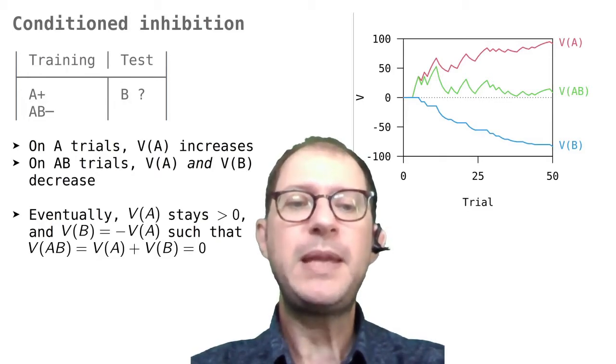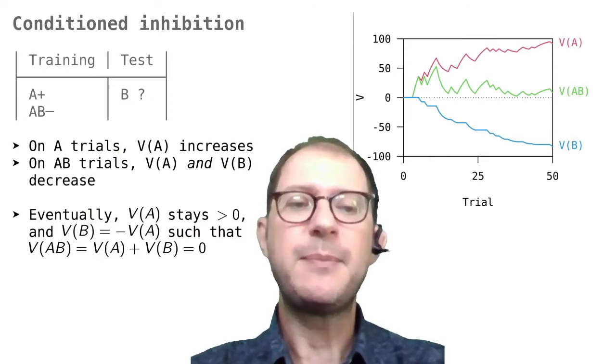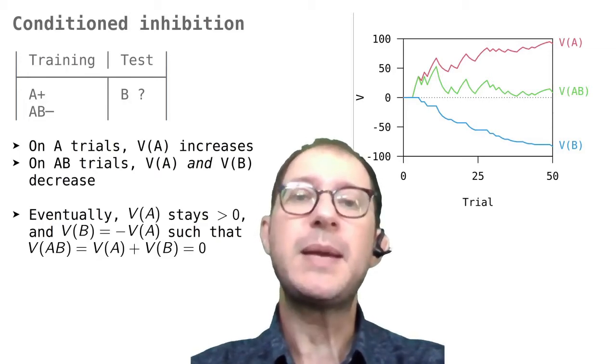Eventually, V(B) becomes as negative as V(A) becomes positive, and because associative strengths sum, this means that V(AB) becomes zero.